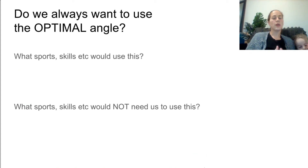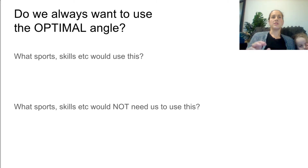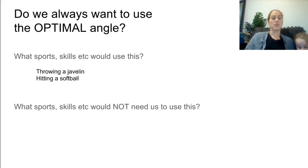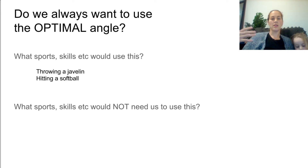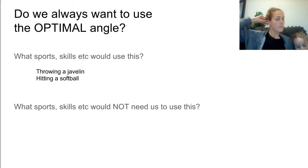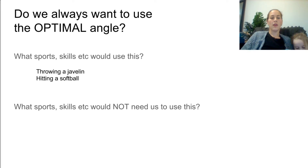Do we always want to use the optimal angle in sporting situations? For skills aimed at distance, examples include throwing a javelin and hitting a softball. Optimally, with no external forces, 45 degrees would apply. However, due to air resistance and spin, you would aim for probably 35 degrees for both of those skills.